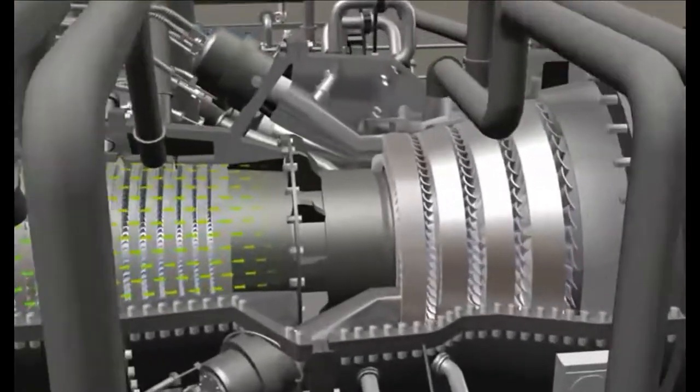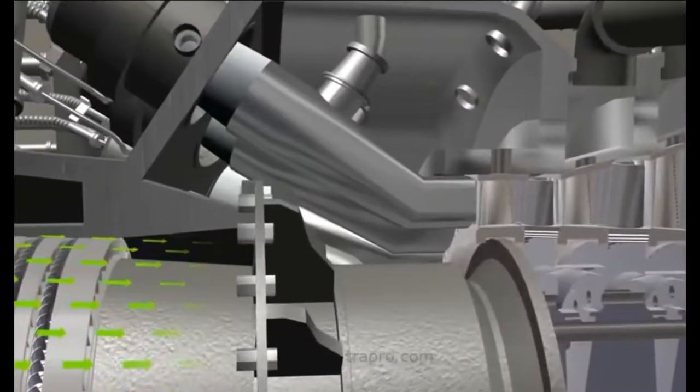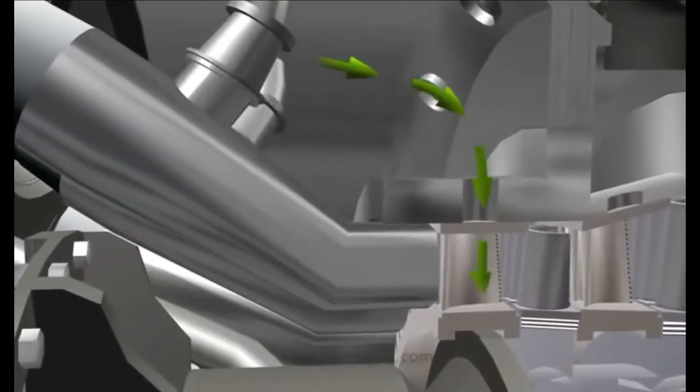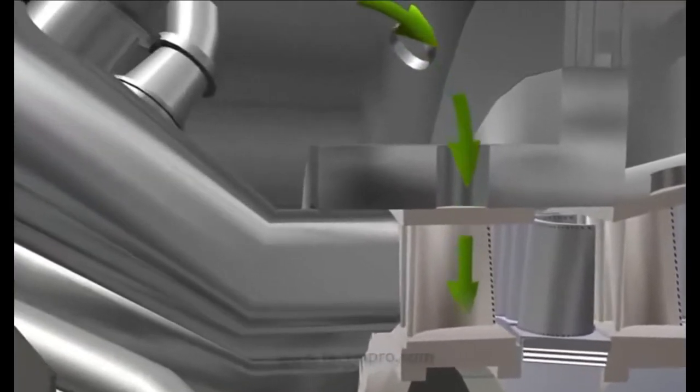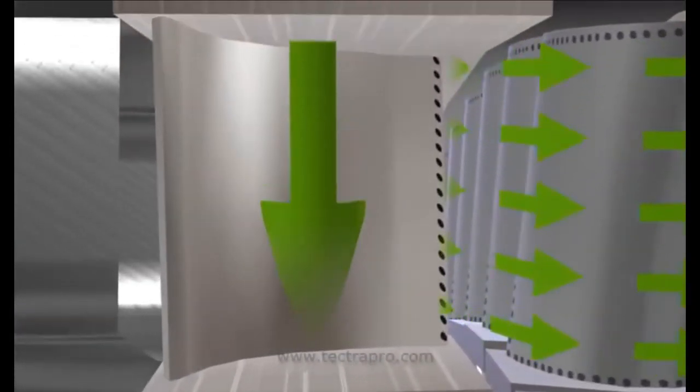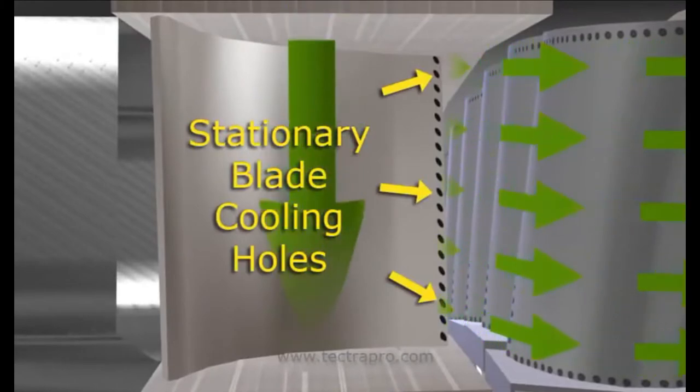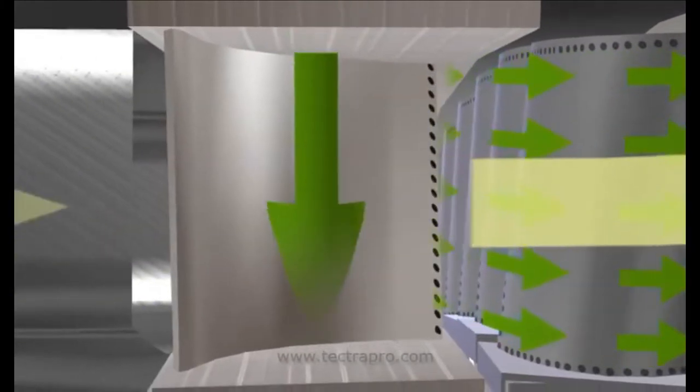The first row of stationary blades is cooled by air that is routed through the combustor shell from the compressor discharge. Cooling air flows through the hollow blades and exits the cooling holes on the trailing edges of the stationary blades.